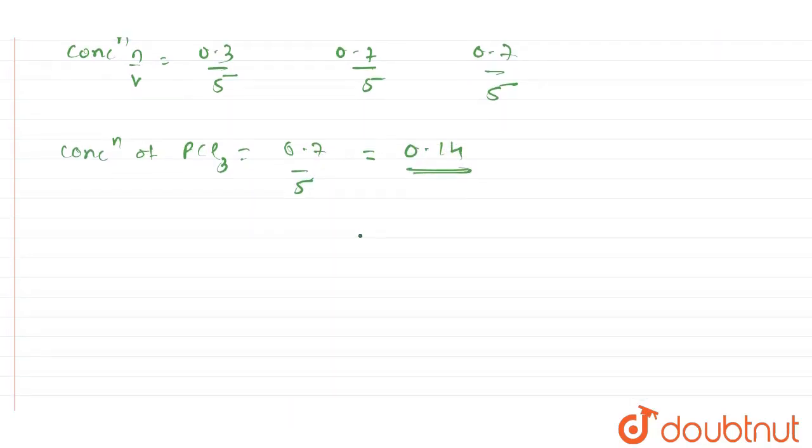Moving forward, it is asked to find the Kc value for this question. The Kc value will be equal to the concentration of PCl3 multiplied by the concentration of Cl2, the whole divided by concentration of PCl5.